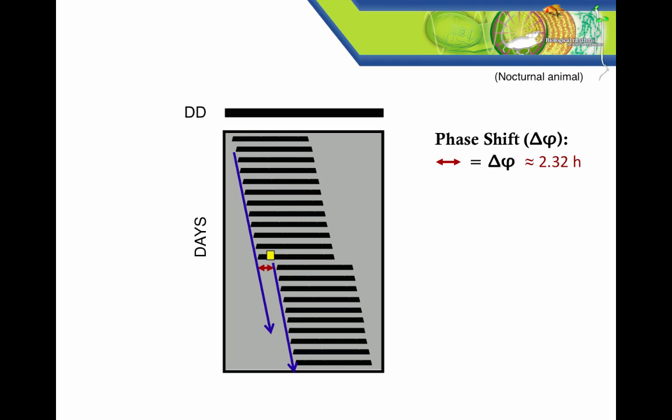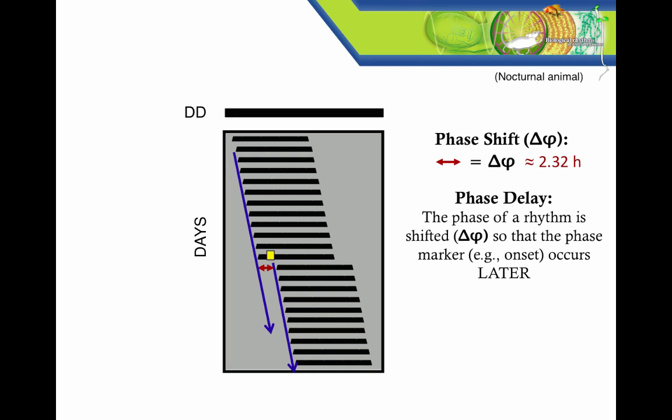What's more, this is a specific kind of phase shift. A phase shift can either be called an advance or a delay, depending on the direction of the shift. Because the rhythm shifted to the right of the actogram and got later, or was delayed, we call it a phase delay, and we denote the magnitude of the phase delay, in this case 2 hours and 43 minutes, as a negative value. If you're looking at an actogram and see a phase shift, an easy way to determine whether it is a delay is to remember nerd: negative, right, delay.